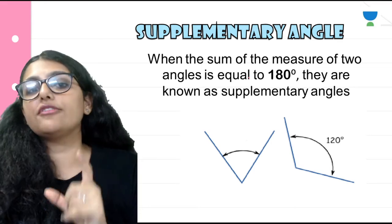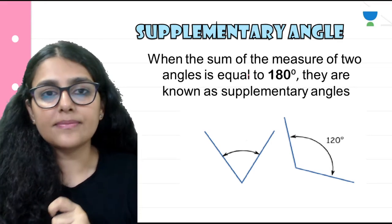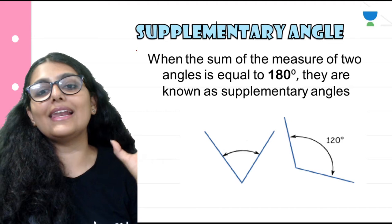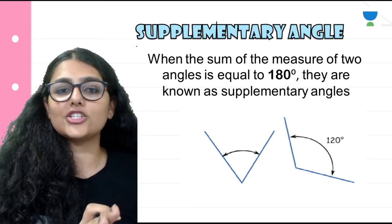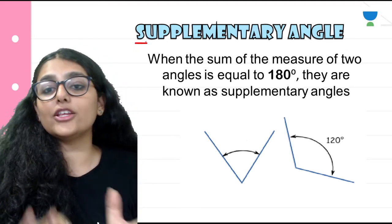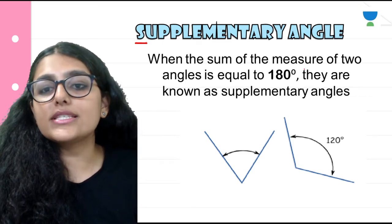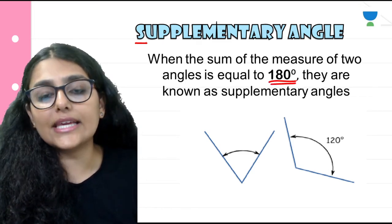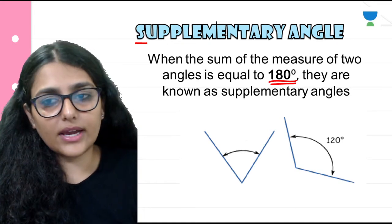Now supplementary angles are a little different from complementary. Complementary starts with C, so remember C comes first and its answer is 90 degrees. Supplementary comes after, so the answer is bigger — 180 degrees. When the sum of the measure of two angles is equal to 180 degrees, they are known as supplementary angles.